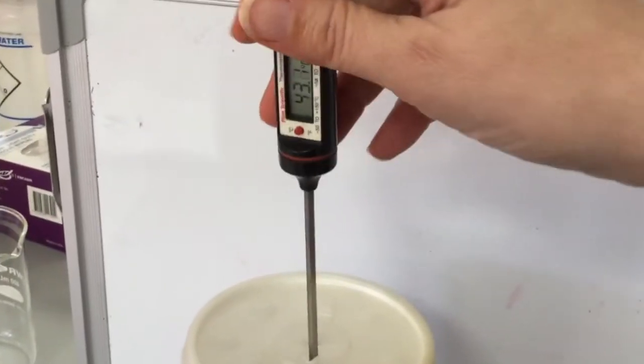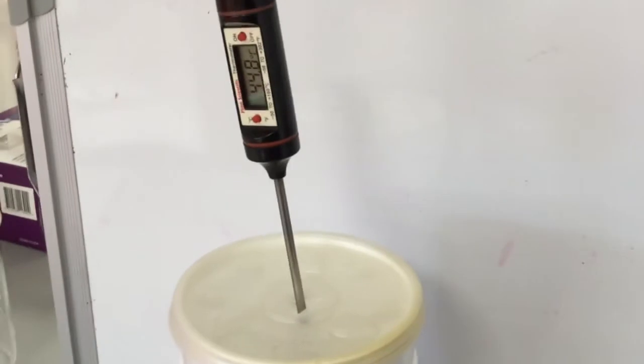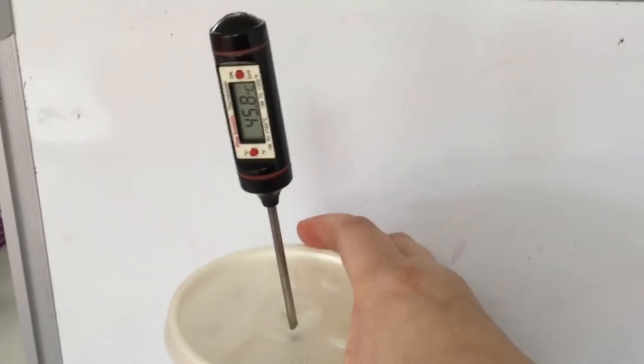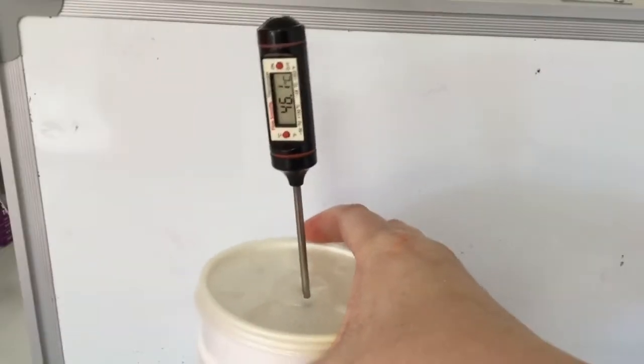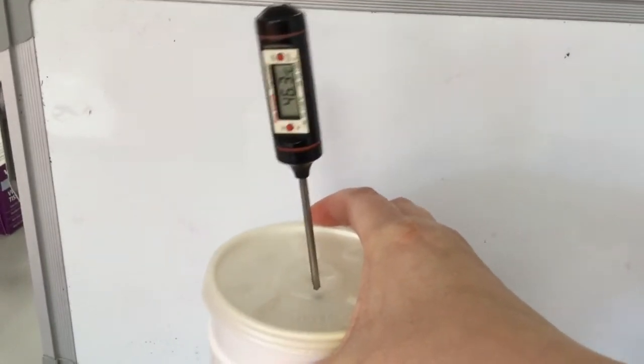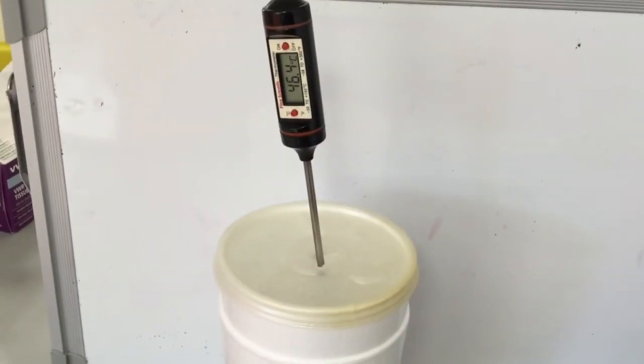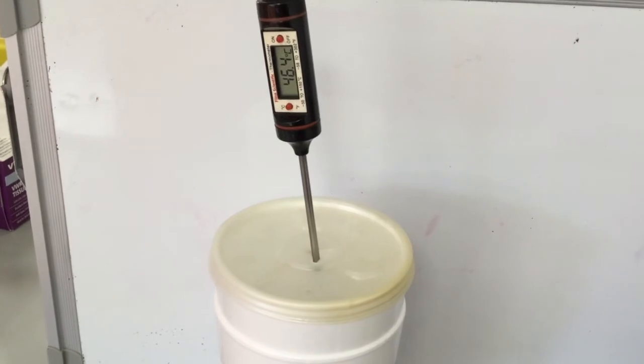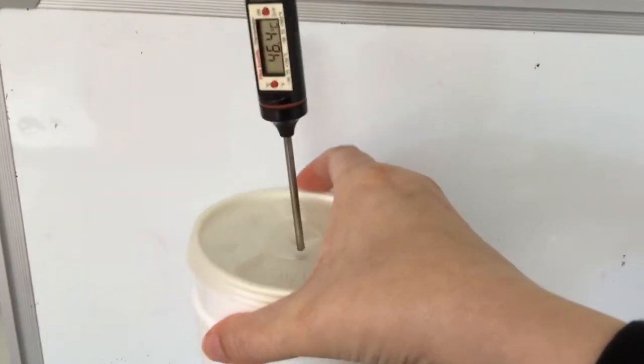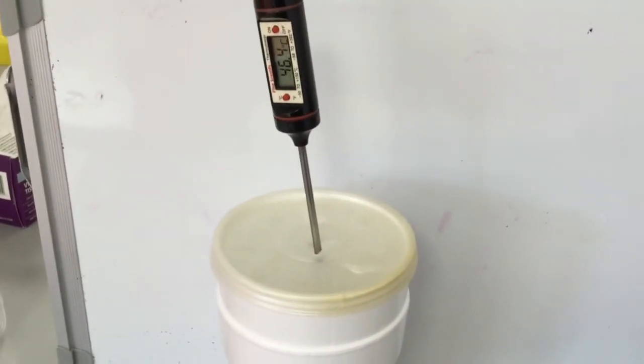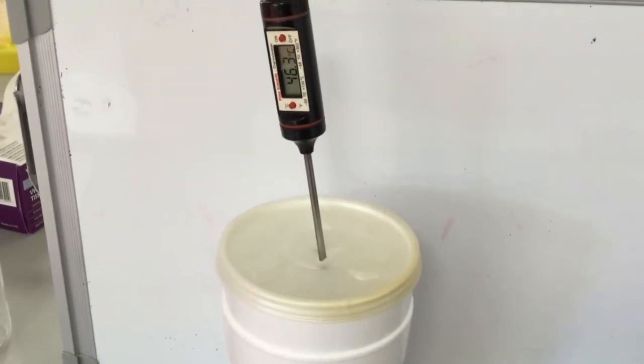Once you have recorded the temperature of your hot water, you're going to pour the hot water into the cold water and immediately replace the lid. Insert the thermometer and begin watching the temperature. We are looking for the highest point that the temperature reaches. This may take up to a minute. So make sure that you continue watching until the temperature starts to fall.